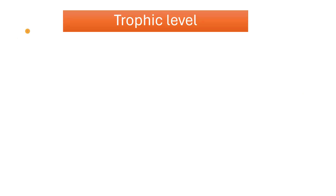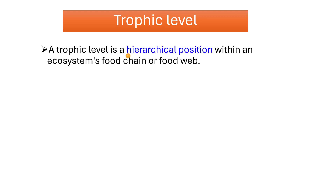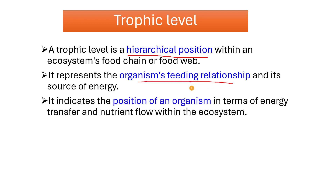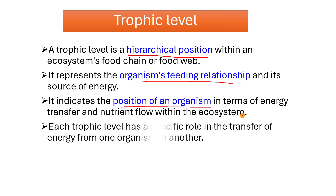Let us define the trophic level. A trophic level is a hierarchical position within an ecosystem's food chain or food web, representing the organism's feeding relationship and its source of energy. It indicates the position of an organism in terms of energy transfer and nutrient flow within the ecosystem. Each trophic level has a specific role in the transfer of energy from one organism to another.